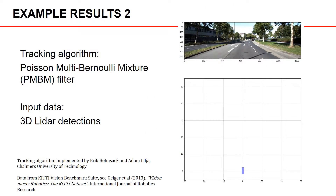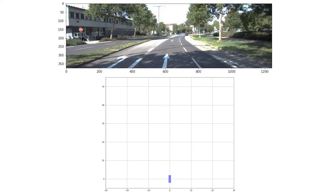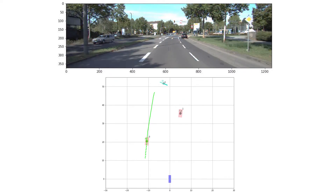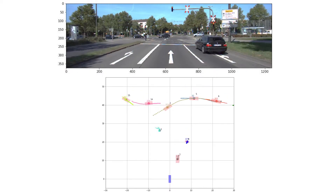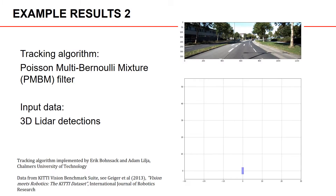Here is one additional example from a slightly different environment. As we can see in this video, the tracking algorithm is capable of tracking both small and large objects. These two particular videos were produced by two master thesis students at Chalmers. We chose to show these specific results because we wanted to highlight that what you will learn here really brings you to the cutting edge of tracking research, both for automotive applications and for other types of applications.